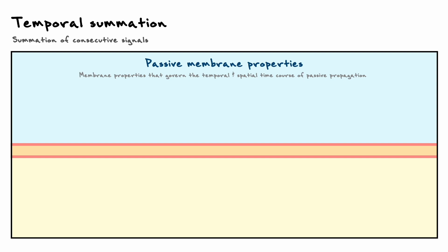The three properties are the membrane capacitance, the membrane resistance, and the axial resistance. To give a brief description for each, let's start with the membrane capacitance.